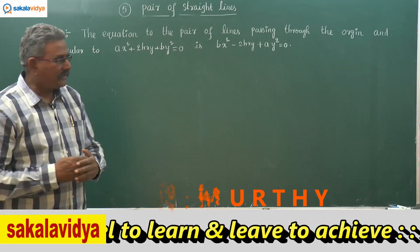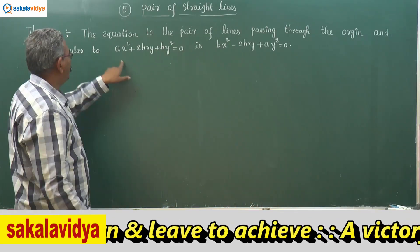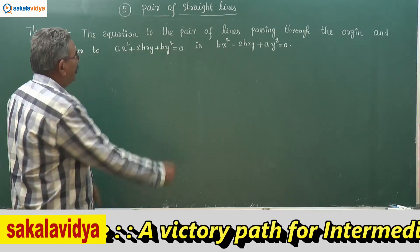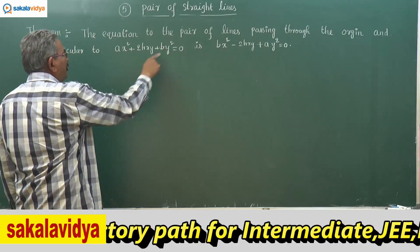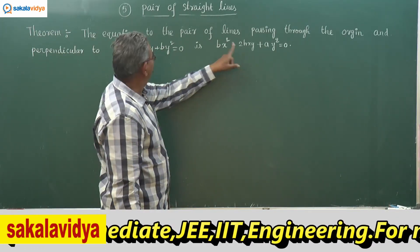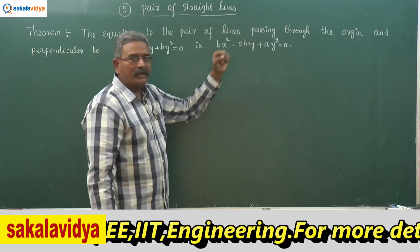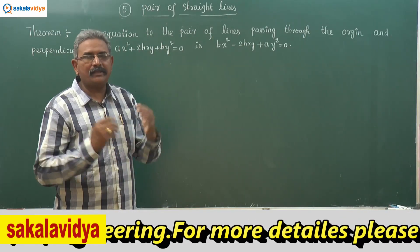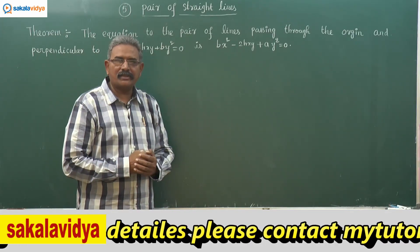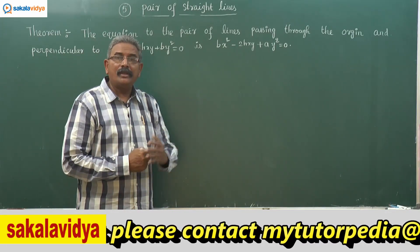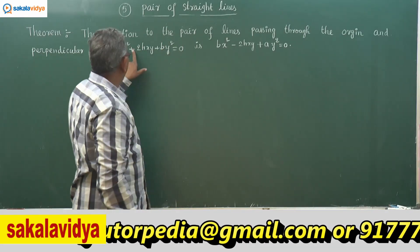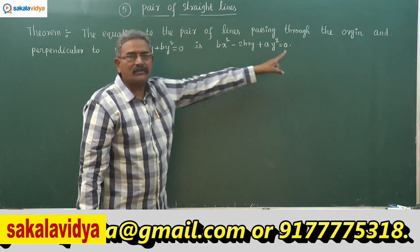A very simple technique to remember: interchange the a and b coefficients and change the sign of the xy term. In place of a, b comes; in place of b, a comes; and the sign of 2h is changed. This gives the equation to the pair of lines passing through the origin perpendicular to the given pair: bx² - 2hxy + ay² = 0.